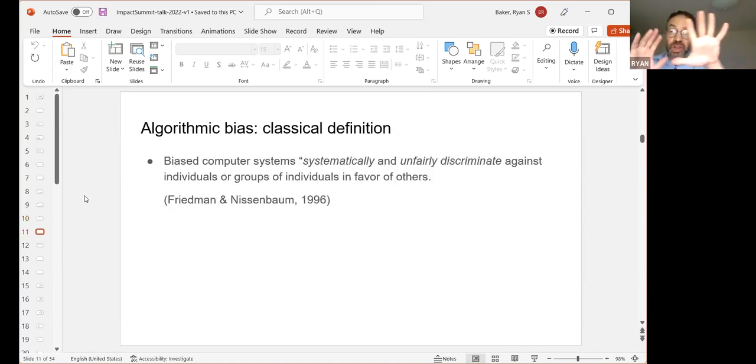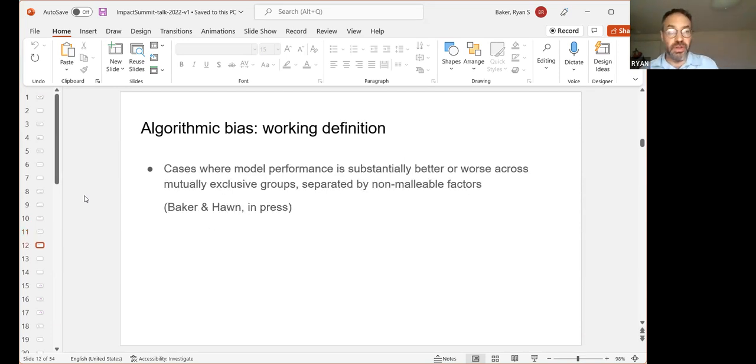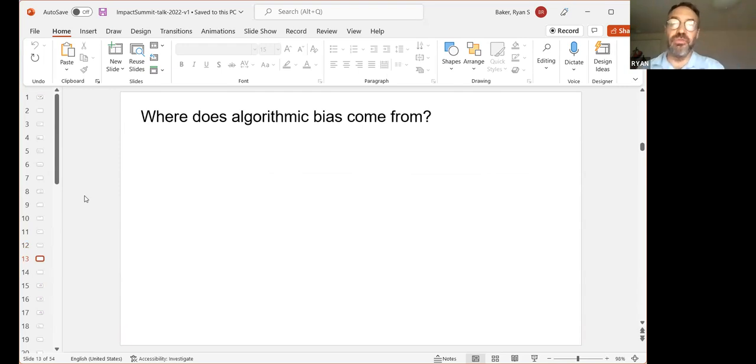The algorithm was figuring out how to be biased just like the humans. And so when we get bias in our data, we get bias in our algorithms. So algorithmic bias is when a biased computer system systematically and unfairly discriminates against individuals or groups of individuals in favor of others.